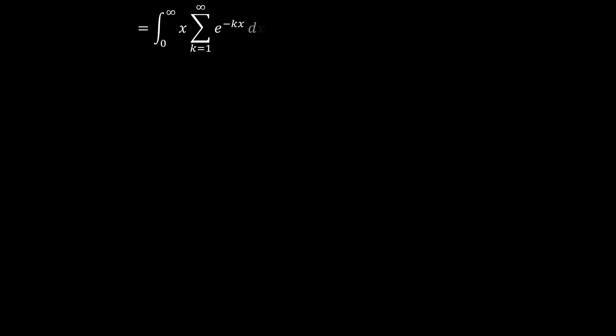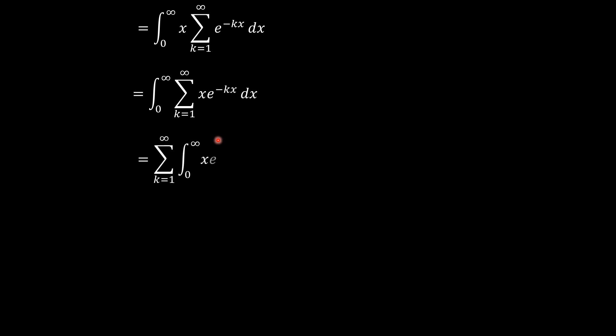We have this clean summation times x. Pulling x inside the sum, our integrand becomes the sum from k equals 1 to infinity of x times e to the power negative kx. Since the integral of a sum equals the sum of the integrals, we rearrange to sum the individual integrals: the sum from k equals 1 to infinity of the integral from x equals 0 to infinity of x times e to the power negative kx.